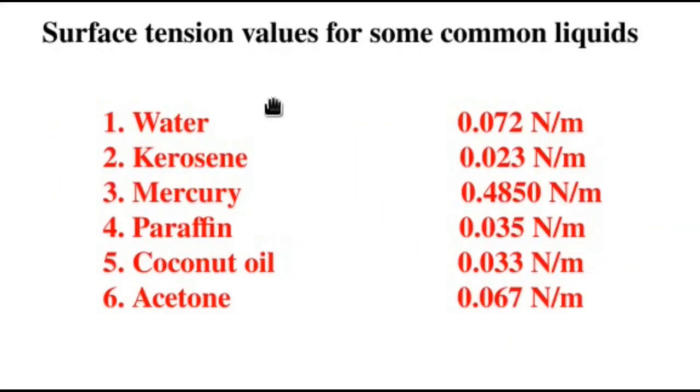These are some quantitative measures of the surface tension values for some common liquids. For water, it is about 0.072 newtons per meter. Kerosene 0.023. Mercury has higher value for the surface tension that is 0.485. Paraffin 0.035. Coconut oil 0.033. Acetone 0.067 newtons per meter. So, obviously these values are different for different liquids.